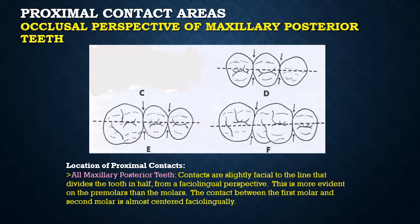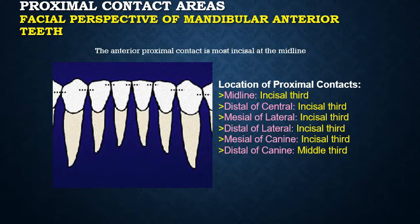For the maxillary posterior teeth from the occlusal aspect, the contact areas are slightly facial to the facial-lingual dimensions — unlike the anterior teeth which are centered. This applies to the first premolar, second premolar, and first and second molars; in all these teeth the contact areas are slightly facial to the center of the facial-lingual dimension.